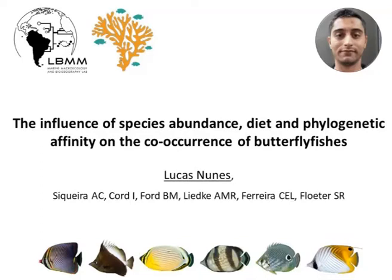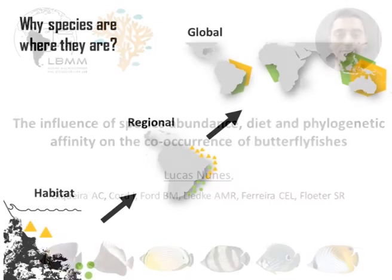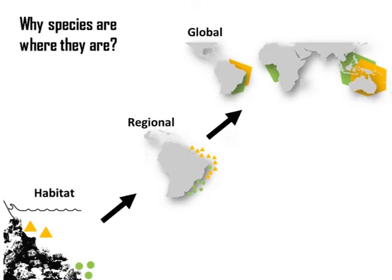Hello, my name is Lucas and I will present my study entitled The Influence of Species Abundance, Diet and Phylogenetic Affinity on the Co-occurrence of Butterfly Fishes. Understanding why species are where they are at different scales has been one of the main focuses of ecological and biogeographical studies.